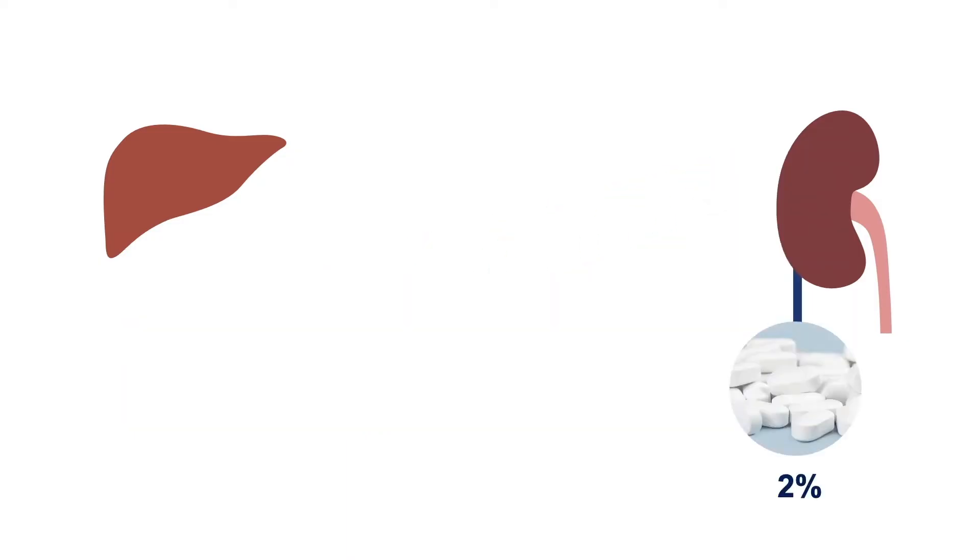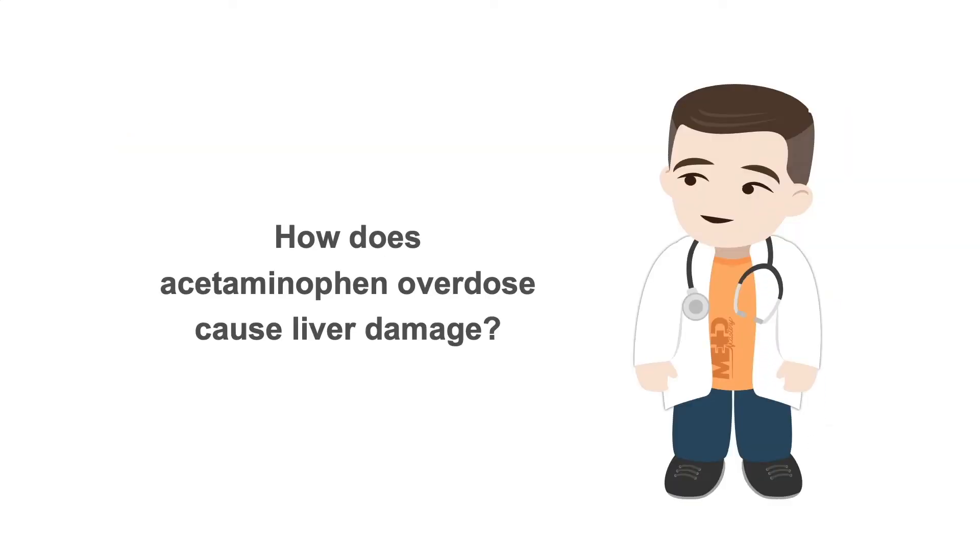For completeness, about 2% doesn't get processed and travels straight to the kidney. So how does acetaminophen overdose cause liver damage?